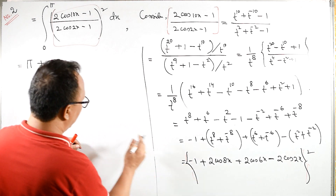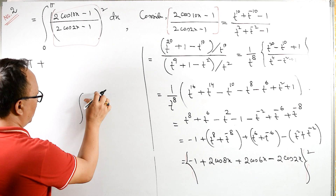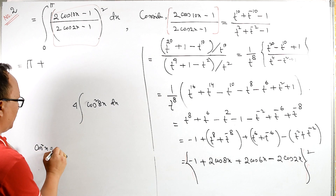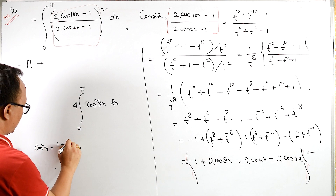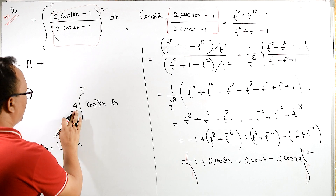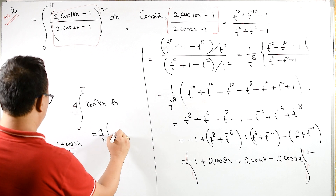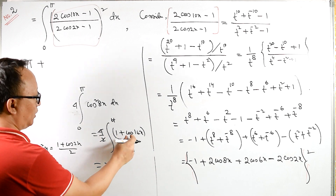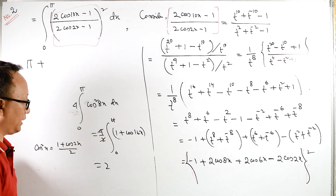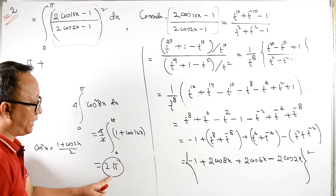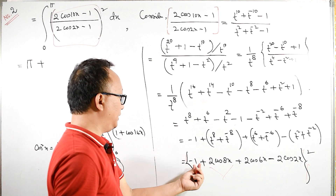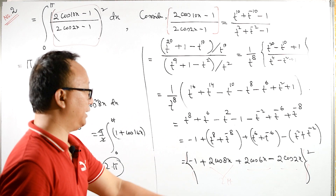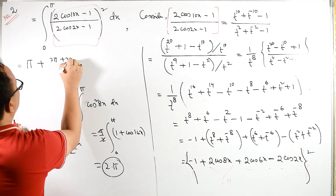For the squared term of 2 cos 8x, we take 4 outside: integral of cos²(8x) dx. Using cos²x = (1 + cos 2x)/2, this gives (4/2) = 2 times integral of (1 + cos 16x) from 0 to π. The integration of cos 16x gives sine, and sine from 0 to π becomes zero, so we get 2π. Similarly for (2 cos 6x)² we get 2π, and for (2 cos 2x)² we also get 2π. So summing the squared terms: π + 2π + 2π + 2π equals 7π.